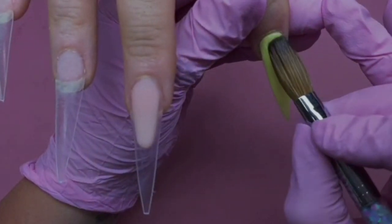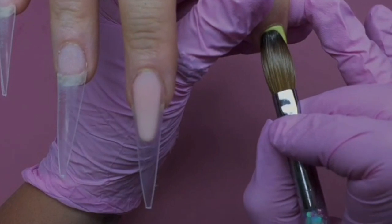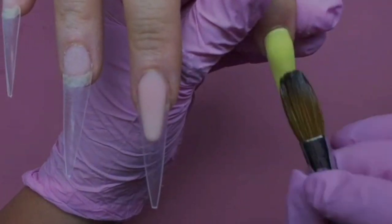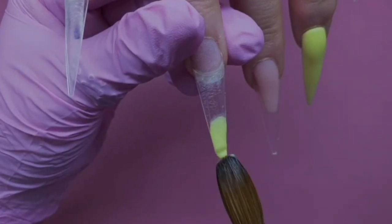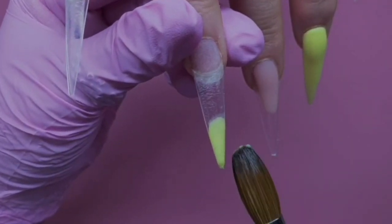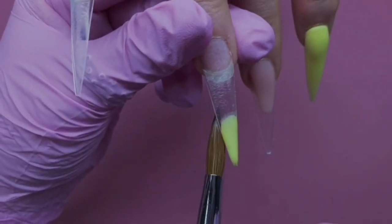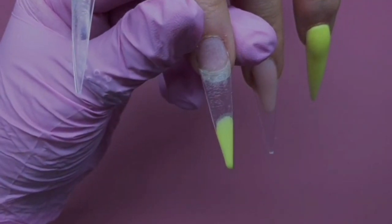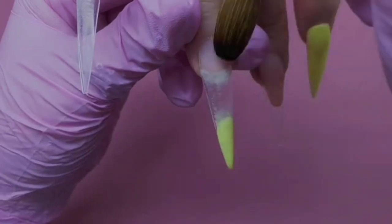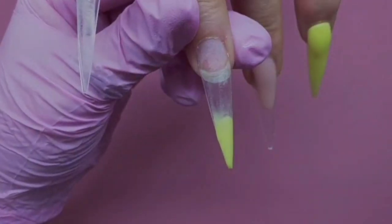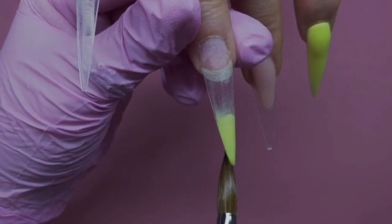Obviously just trying to get as smooth as possible, but don't worry if it's not totally perfect because you're going to be covering it in glass slippers anyway, and filing fixes everything. Same technique here, just making sure it's fully covered at that tip.